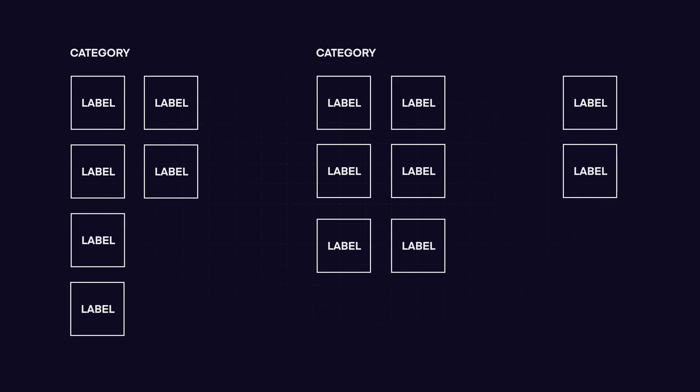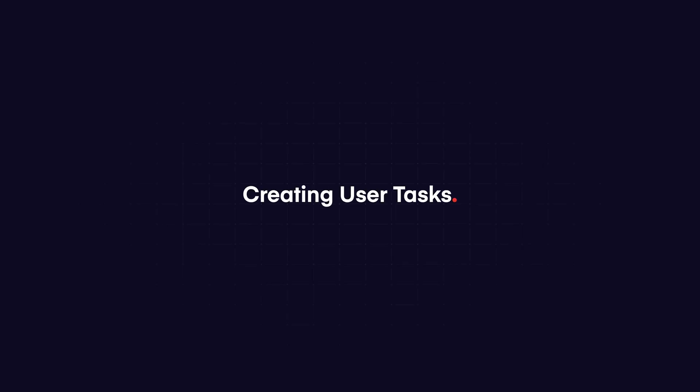Hybrid card sorting means you have some predefined category names but also allow the participant to add their own category names if they want to. This is usually very good if you're checking the language on a current sitemap or architecture, want to rename categories on your current architecture, or are adding new elements to a current structure.